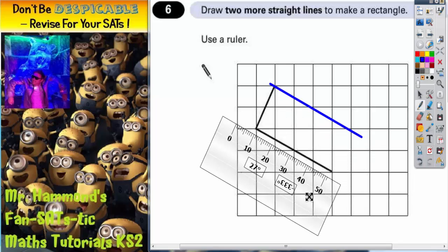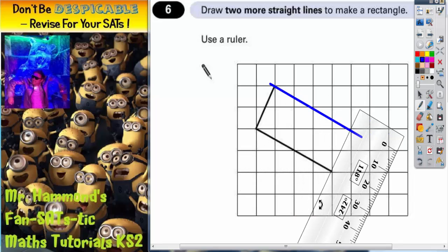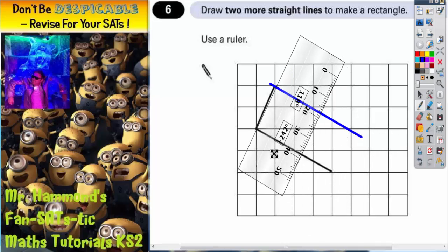Second thing we need to do is rotate the ruler so that it's now parallel with the other side. So not quite. A little bit more. There we go. And this is the short side.